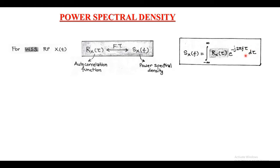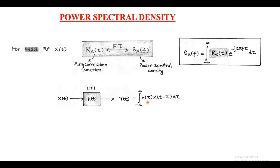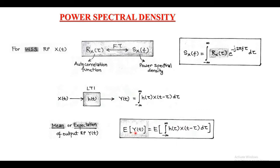Now we consider an LTI system having impulse response h(t), with x(t) and y(t) as input and output random processes. We know that the output of any LTI system is the convolution of input x(t) and impulse response h(t). So the output random process y(t) = ∫ h(τ) x(t − τ) dτ. After taking expectation on both sides, we get the mean of output random process y(t), which equals E[∫ h(τ) x(t − τ) dτ].